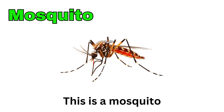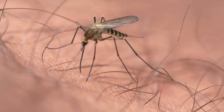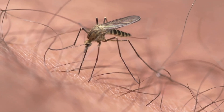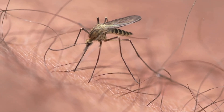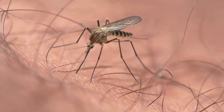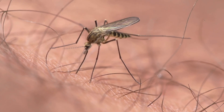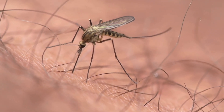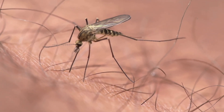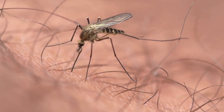Mosquito. This is a mosquito. It bites and drinks blood from people and animals. Mosquitoes can spread diseases like malaria and dengue.